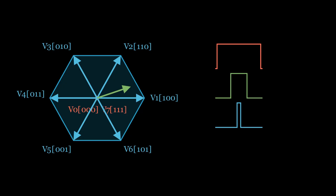The switching sequence reads: 0,0,0 — 1,0,0 — 1,1,0 — 1,1,1 — 1,1,0 — 1,0,0 — 0,0,0, representing the symmetrical on/off states of the three inverter phases across one PWM period.